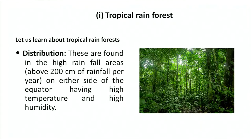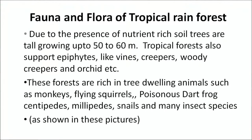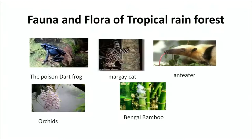Tropical rainforests are found in high rainfall areas — above 200 centimeter rainfall — on either side of the equator, with high temperature and high humidity. The soil is rich in humus. Such forests are found in the Western Ghats of India and scattered across Southeast Asia. Due to nutrient-rich soil, trees grow tall, up to 50 to 60 meters. Tropical forests support epiphytes like vines, creepers, woody creepers and orchids. They are rich in tree-dwelling animals such as monkeys, flying squirrels, dart frogs, centipedes, millipedes, snails, and many insect species.